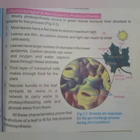In our previous lecture we also learned about the factors that affect photosynthesis and many other things. Here you can see there are five points about the structure of the leaf — how the internal structure of the leaf is. So let's start our lecture. Mostly photosynthesis occurs in green leaves because the structure is suitable for this process.